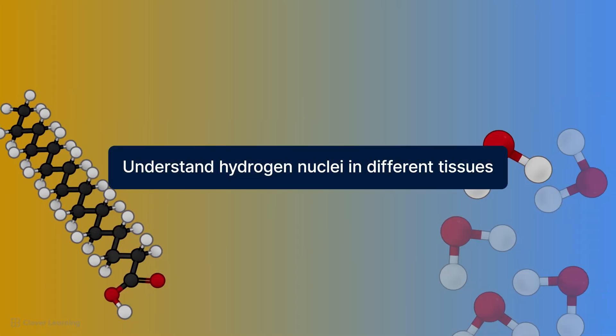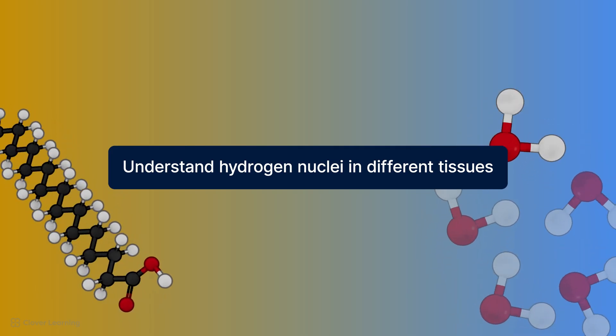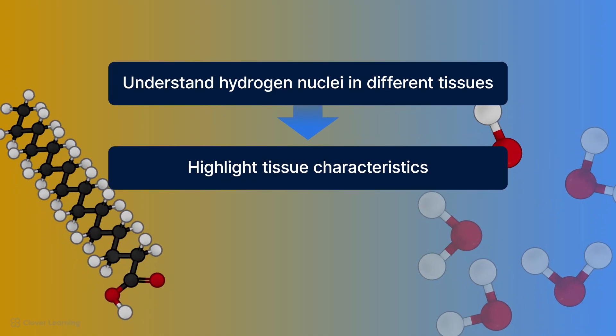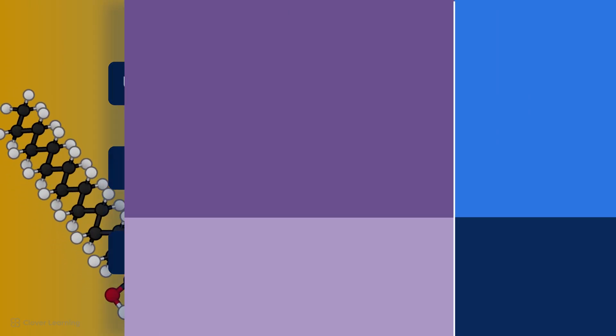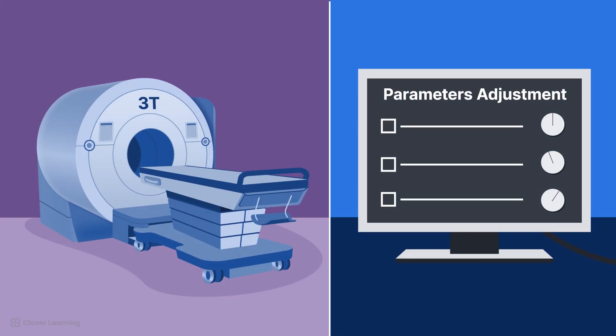By understanding how the molecular composition and density of the hydrogen nuclei in different tissues influence their relaxation times, technologists can manipulate MRI parameters to highlight specific tissue characteristics, enhancing diagnostic accuracy. These techniques are impacted by higher field strength MRI systems requiring a need for careful adjustment of scan parameters to optimize image quality and resolution.